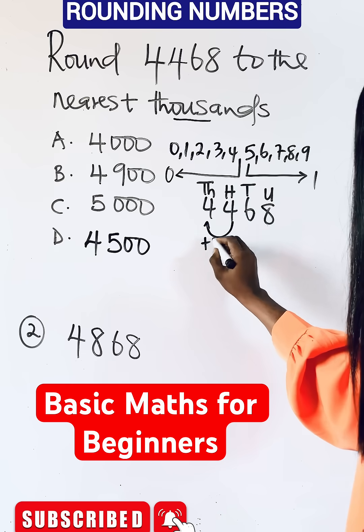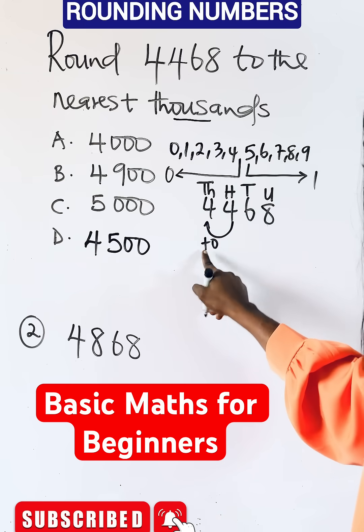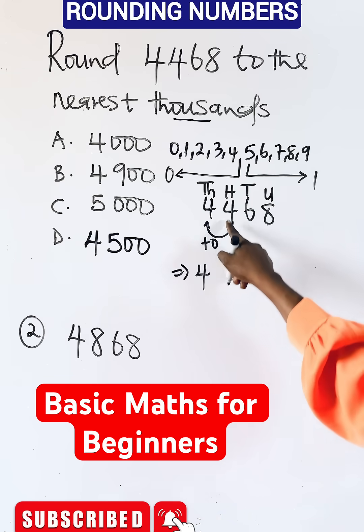It will still give you back four. So you are going to have four, and the other numbers return to zero.